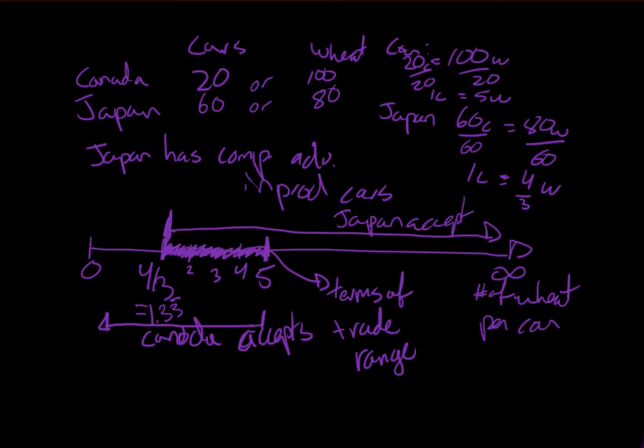We just went through and found that the terms of trade that are acceptable was anywhere between 1.33 to 5 units of wheat per car. For my example now, I'm just going to assume that we're using one car gets you 2.25 units of wheat.